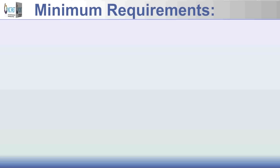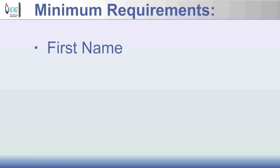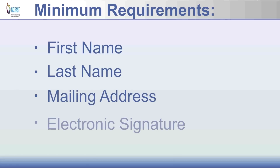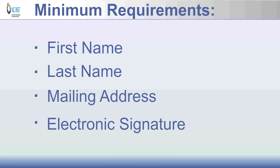At a minimum, food and nutrition service applications must include first name, last name, mailing address, and the electronic signature of the person requesting assistance. However, if you would like to be evaluated for food and nutrition expedited benefits, please answer all the questions relating to expedited food assistance and migrant or seasonal farm worker. To obtain benefits faster, clients should complete as much of the application as possible.